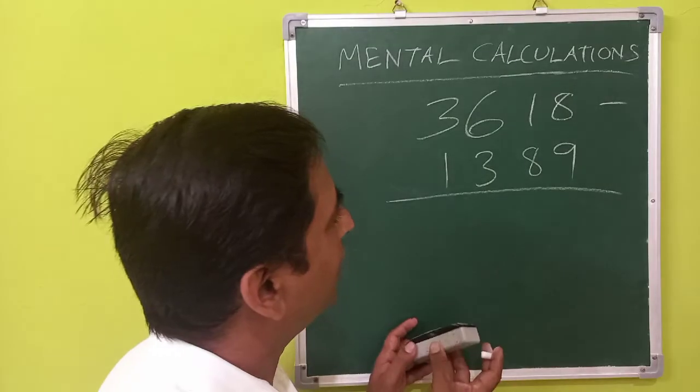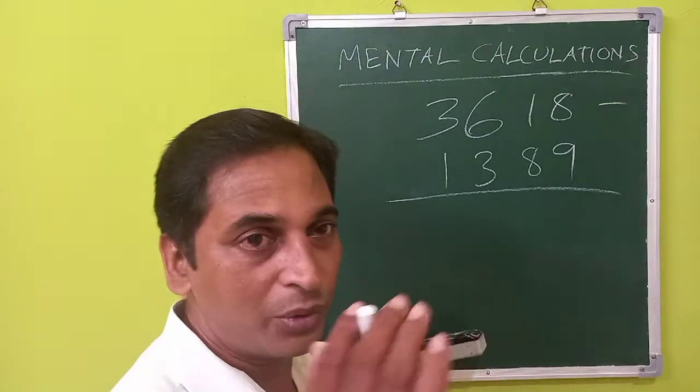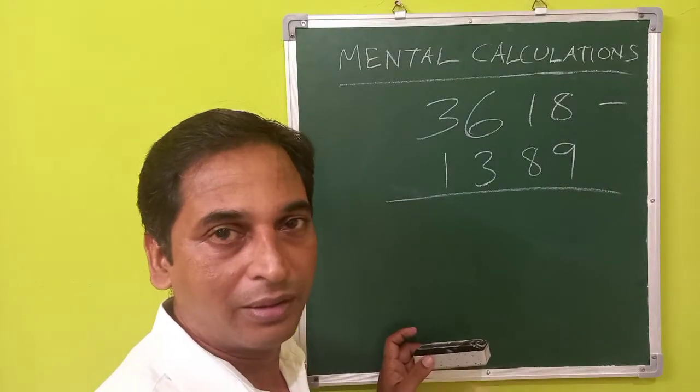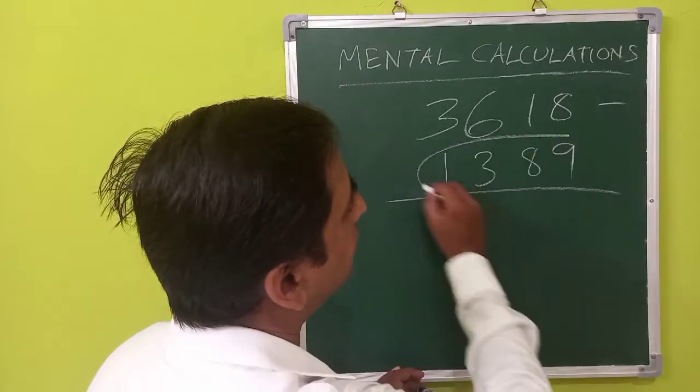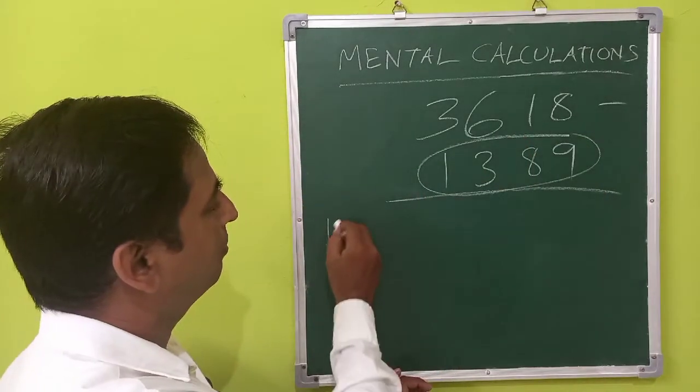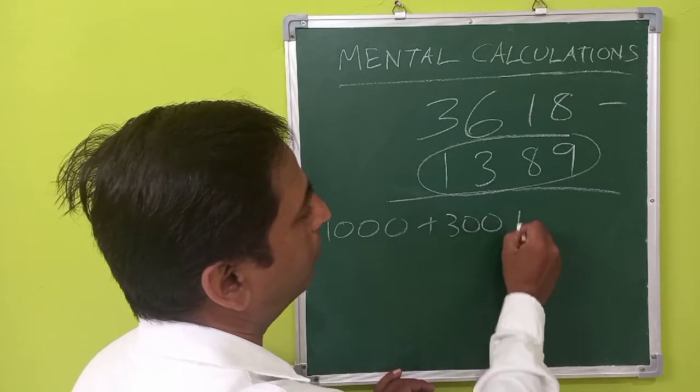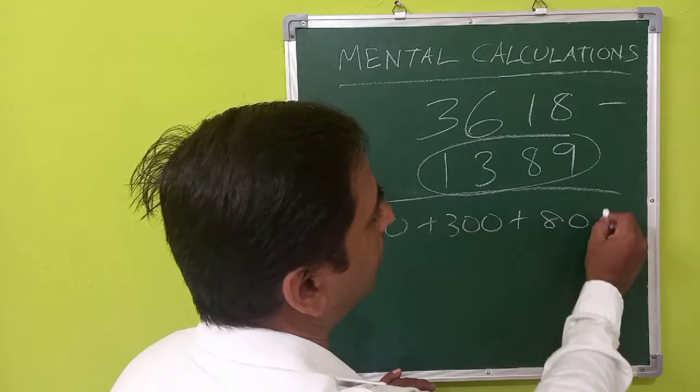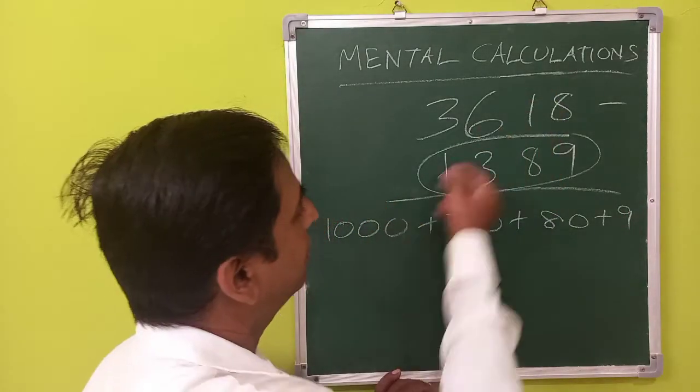If you don't have that much time or you don't have any paper and pen, you can do the mental calculation method by splitting this number into say 1000 plus 300 plus 80 plus 90. Then you subtract these numbers.